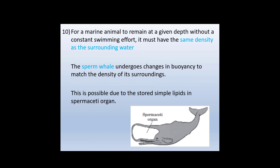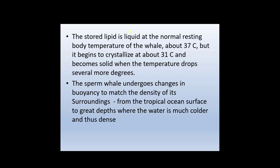For marine animals to remain at a given depth without constant swimming effort, they must have the same density as the surrounding water. The sperm whale undergoes changes in buoyancy to match the density of its surroundings. This is possible due to simple lipids stored in the spermaceti organ. The stored lipid is liquid at the whale's normal resting body temperature of about 37°C but begins to crystallize at about 13°C and becomes solid when the temperature drops several more degrees, allowing the whale to match water density from tropical surface to colder, greater depths.